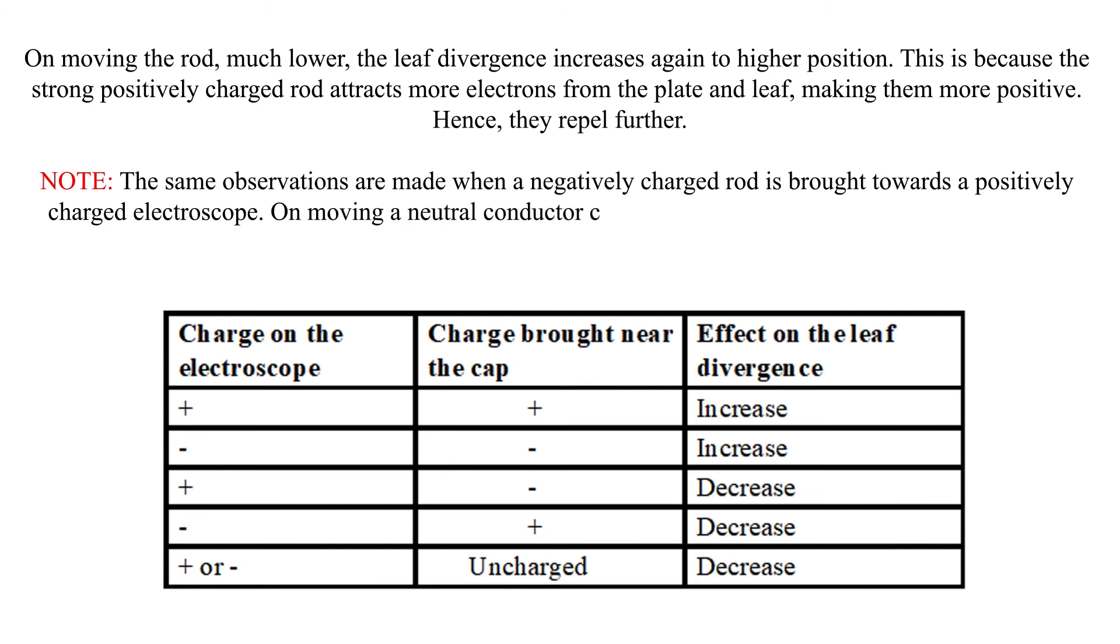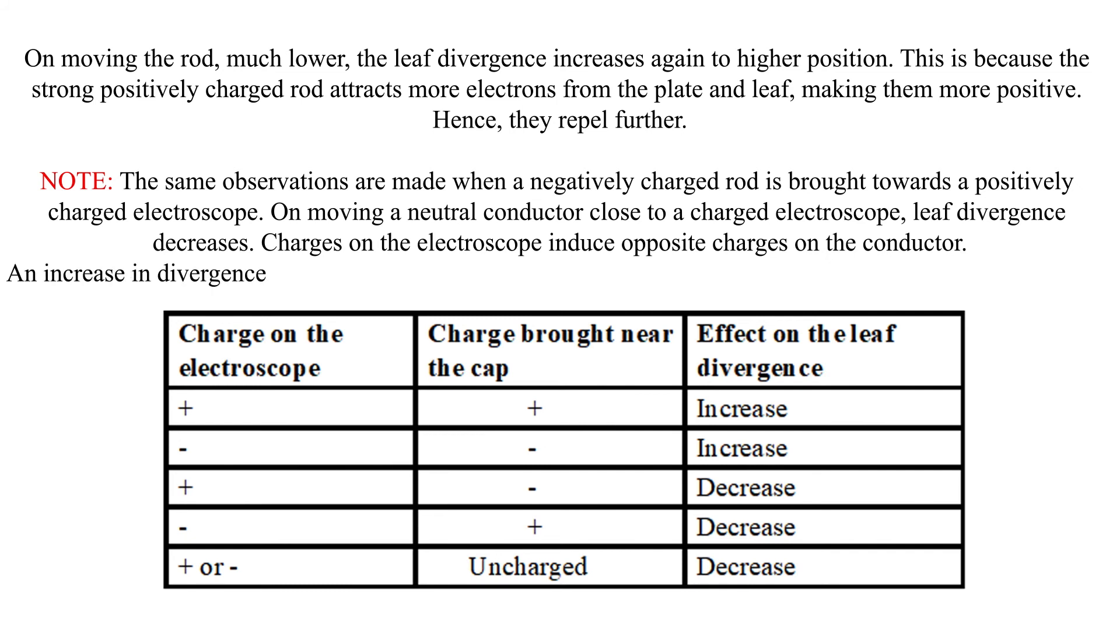On moving a neutral conductor close to a charged electroscope, leaf divergence decreases. Charges on the electroscope induce opposite charges on the conductor. An increase in divergence of the leaf is therefore the only sure way of confirming the kind of charge on a body.